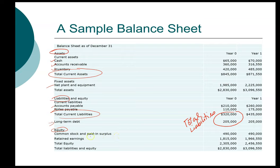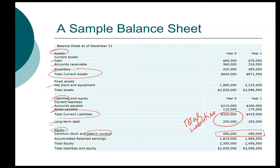One more thing I want to touch on is the difference between common stock and paid-in surplus versus retained earnings. Common stock and paid-in surplus represent the money that the firm received when the stock was originally issued — this is the total amount that investors paid to the firm to buy the stock directly from the company. Companies don't sell new stocks all the time, so this amount is unlikely to change from year to year. Accumulated retained earnings come from the operation of the firm, and you can expect that amount to change from year to year.